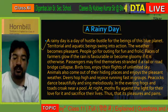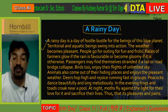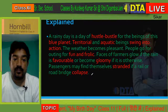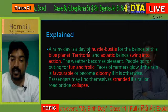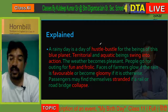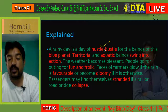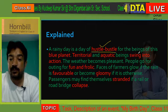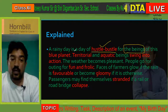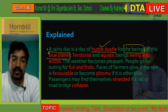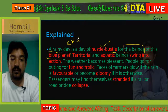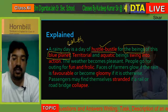Now let's look at some hard words we need to know. A rainy day is a day of hustle-bustle for the beings of this blue planet. Hustle-bustle refers to our daily chores, daily routine — the busy and active life. The beings means the creatures on this planet. Blue planet here refers to Earth — our mother Earth is denoted as blue planet.